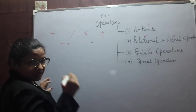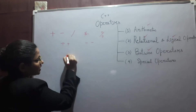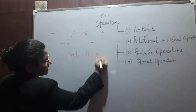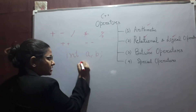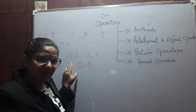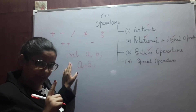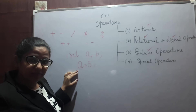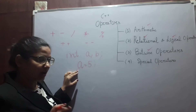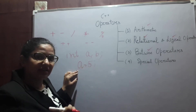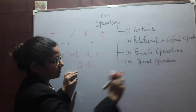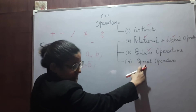Let's see these operators with an example. We declare two variables, int A and B. In the next statement we assign A with the value five. This equals sign here is working as an assignment operator, which comes under special operators.